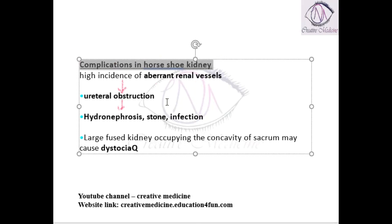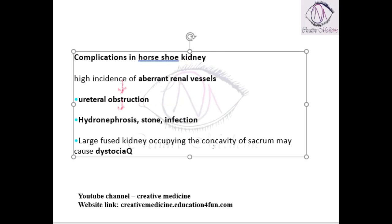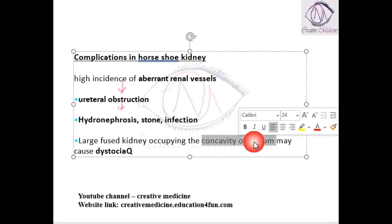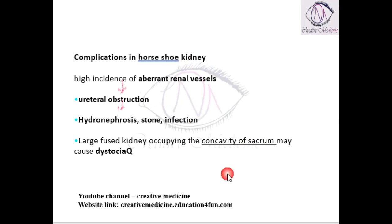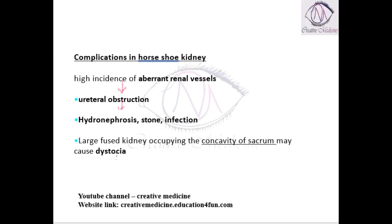In horseshoe kidney, a large fused kidney is present, and this large fused kidney occupies the concavity of the sacrum. If the large fused kidney is occupying the concavity of the sacrum, then this can cause dystocia in these patients.